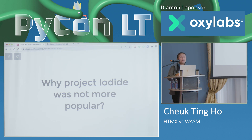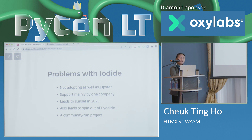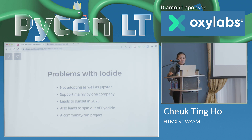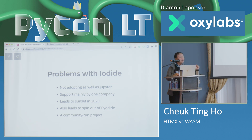Why was Project Iodine not more popular? Well, if it were popular, it wouldn't have gotten sunset. The problem is that at that time we had the project that everyone knows and loves: Project Jupyter. A lot of data people, data scientists, and researchers were favoring Jupyter Notebook and JupyterLab, which was adopting faster. Project Iodine was still developing. Also, because it was mainly by Mozilla, it wasn't a community-led project — that made it very challenging, so they sunset it in 2020. But the project we know today as Pyodide is actually a community-run project, not maintained by Mozilla but by the community. We are still using it nowadays.